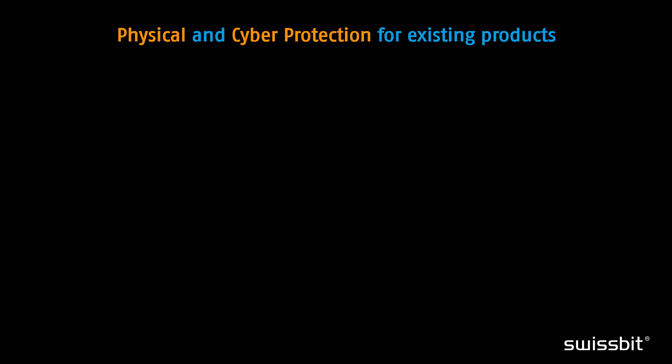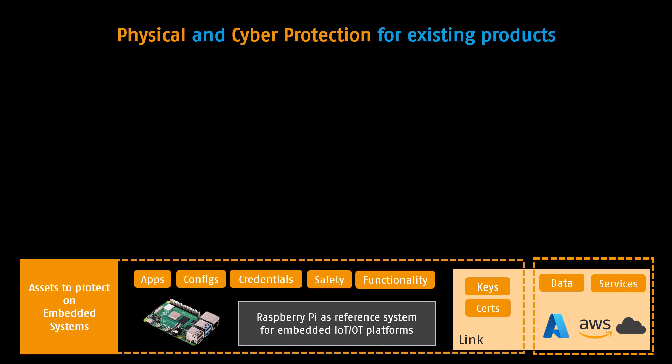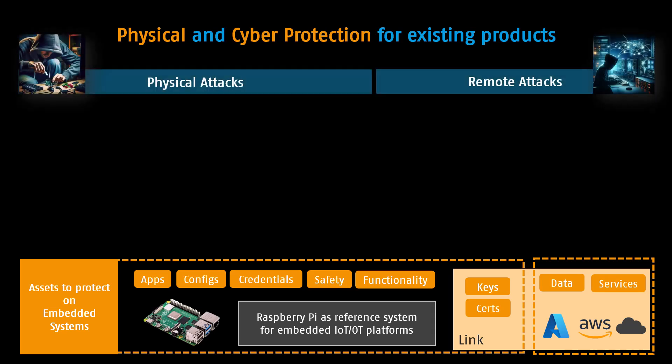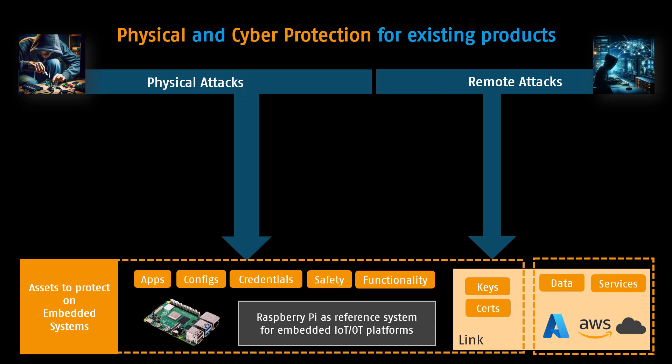So what can our micro SD cards protect against, and what can they not? Let's divide the potential threats into two categories: physical attacks, where someone has access to the device, and remote attacks, which occur over a network like the internet or a nearby connection. Both types of attacks aim at the valuable assets stored in your embedded system. These can include applications, configurations, credentials for back-end services like VPNs, safety parameters, and cloud communication credentials.